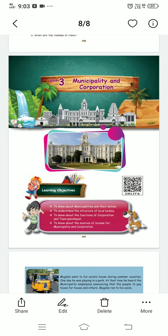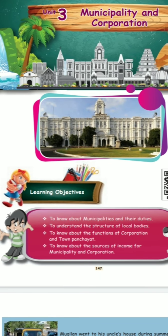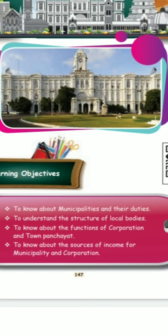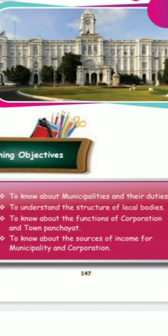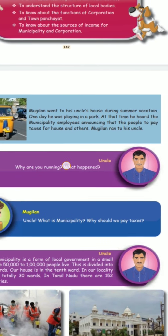Good morning children. Today we are going to see a Social Class lesson. The lesson name is 'Municipality and Cooperation' — this is the third lesson. We are going to see about the duties of municipality, how they function, what about the town panchayat, how they get their income, and what facilities they provide for us. This lesson is fully explained through a conversation between Mugilan and his uncle.